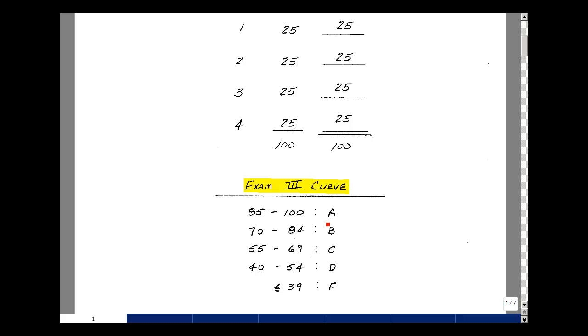85 to 100 was an A, 70 to 84 was a B, 55 to 69 a C, 40 to 54 a D, and less than or equal to 39 an F. I'll also explain how to grade the exam with partial credit.